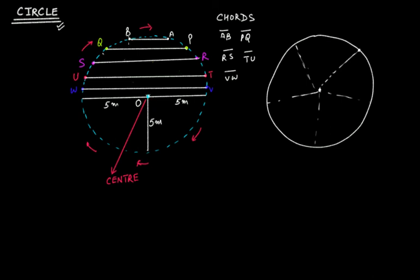Going from a smaller chord to a larger chord and then a larger chord still — eventually I can draw a chord that passes through the center, with the two endpoints E and F on the circle. This chord EF is still a chord because both points are on the circle, but it's a special kind of chord because it passes through the center O. That special chord is called the diameter.